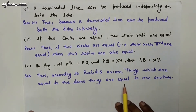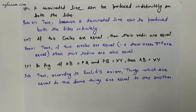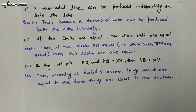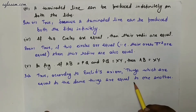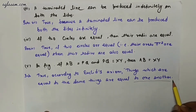The fifth part: in the figure, if AB equals PQ and PQ equals XY, then AB equals XY. This is true. According to Euclid's axiom, things which are equal to the same things are equal to one another.